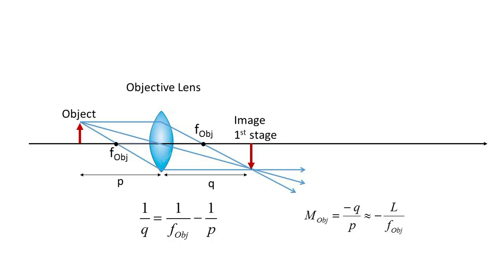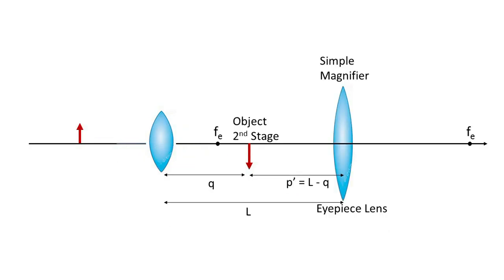Also, it is frequently assumed that the image distance is equal to the length L of the microscope barrel, which is also not exact. These two assumptions lead to an approximate magnification of the first stage given by the negative ratio of barrel length divided by the objective focal length, M equals minus L over F. The negative accounts for the inversion of the image at this stage.